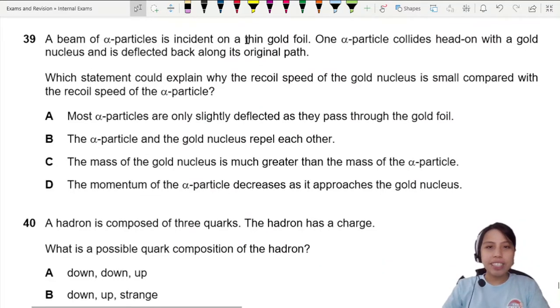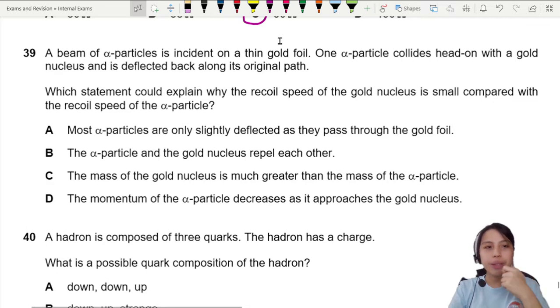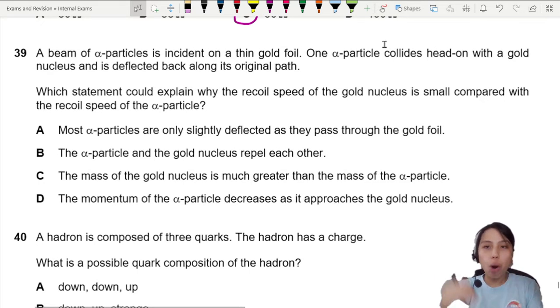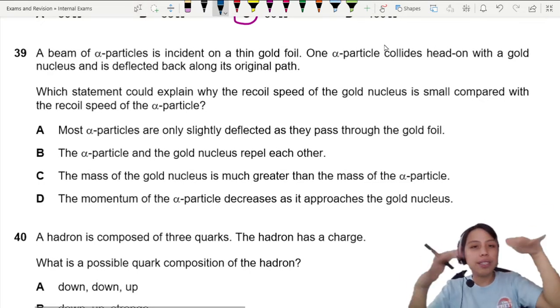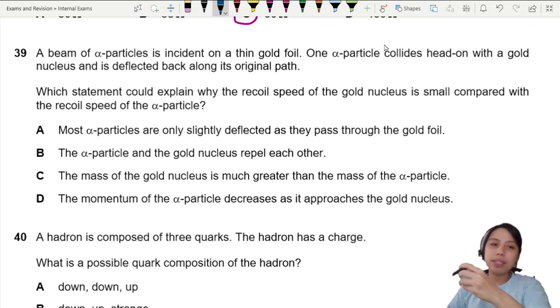A beam of alpha particles is incident on a thin gold foil. This is Rutherford's scattering experiment. One alpha particle collides head-on with a gold nucleus and it is deflected back along its original path. Which statement can explain why the recoil speed is small?